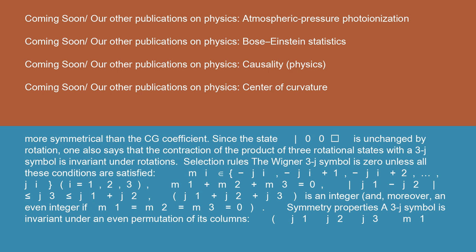Selection rules: the Wigner 3j symbol is 0 unless all these conditions are satisfied: m_i ∈ {-j_i, -j_i+1, -j_i+2, ..., j_i} if i = 1, 2, 3; m1 + m2 + m3 = 0; |j1 - j2| ≤ j3 ≤ j1 + j2; j1 + j2 + j3 is an integer and moreover an even integer if m1 = m2 = m3 = 0.